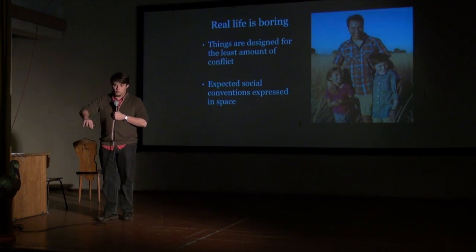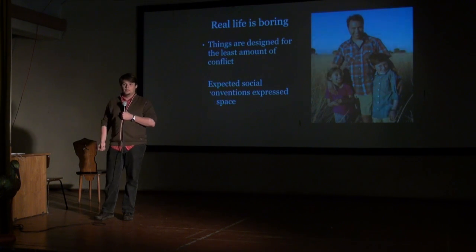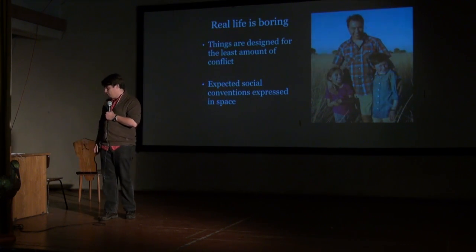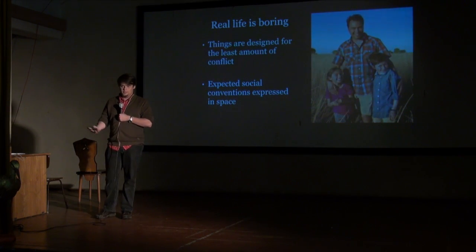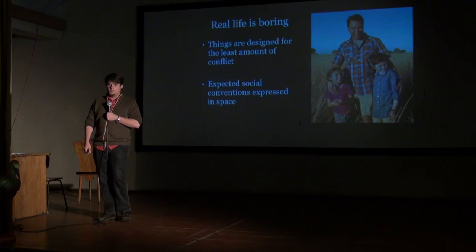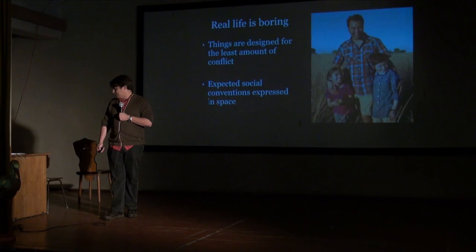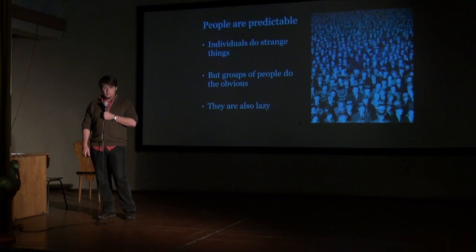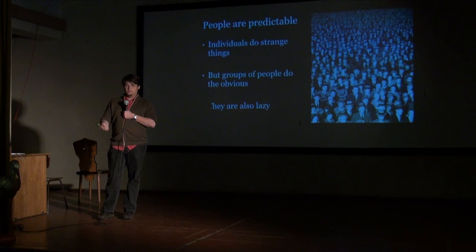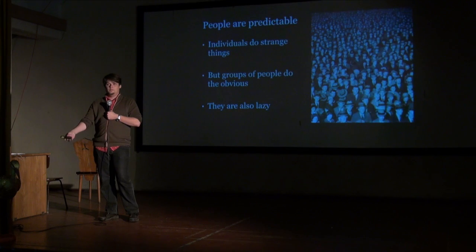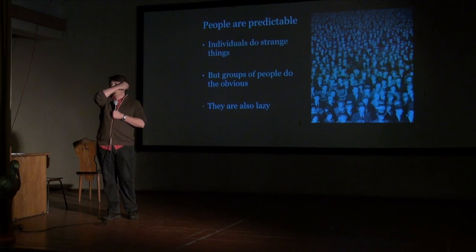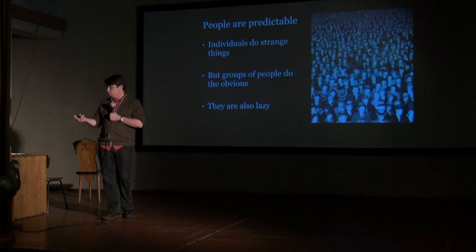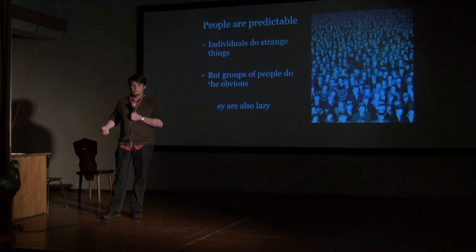In real life, things are designed not to create conflict. In the city you have the sidewalk where the pedestrians walk and you have the cars in the street, and they never meet except when the light tells who can move. The way we're supposed to act to each other is enforced in the design of things — in buses you have individual seats, so you don't sit and talk to other people. People are very predictable in groups: they all tend to do the same thing, you can predict where they will go, and they tend to be rather lazy and only do a limited set of things.